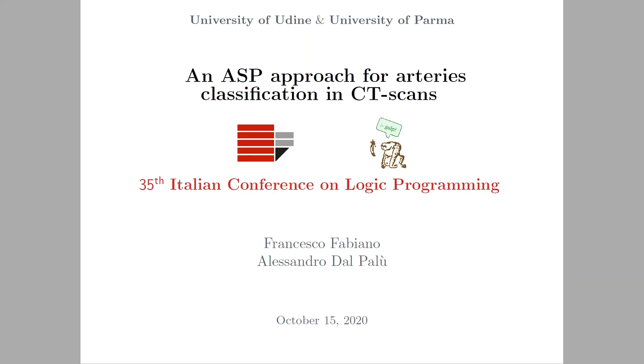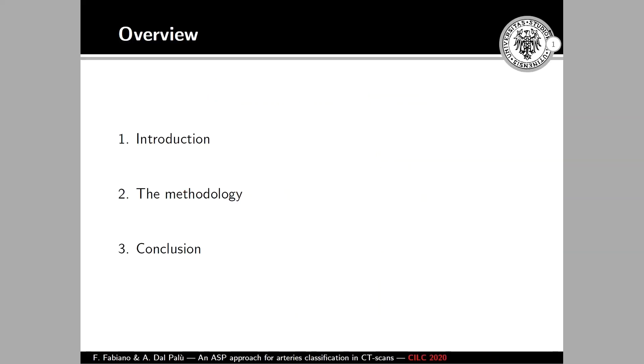Good morning, everyone. I'm Francesco Fabiano and today I'm going to present you the work that Alessandro Dal Palù and I realized for this conference. So, the work we present is going to be about classifying arteries using answer set programming from data retrieved from CT scans. Let's go through the presentation outline quickly. So, first of all, we're going to introduce some notion about CT scan and answer set programming along with some motivation of the work. Then we're going to go through the methodology we employed to do such recognition and then we're going to conclude the presentation.